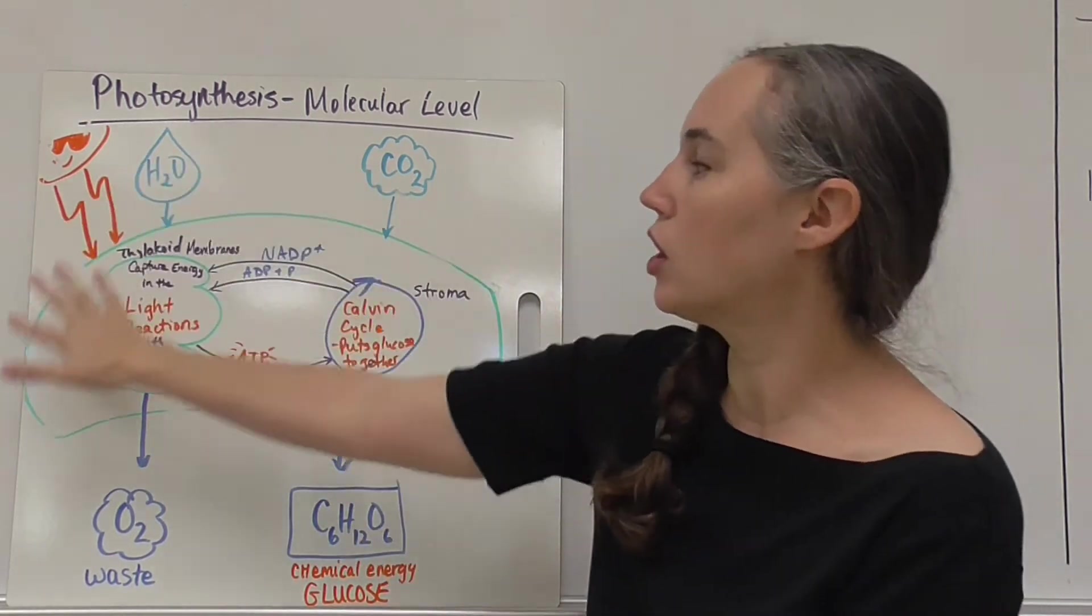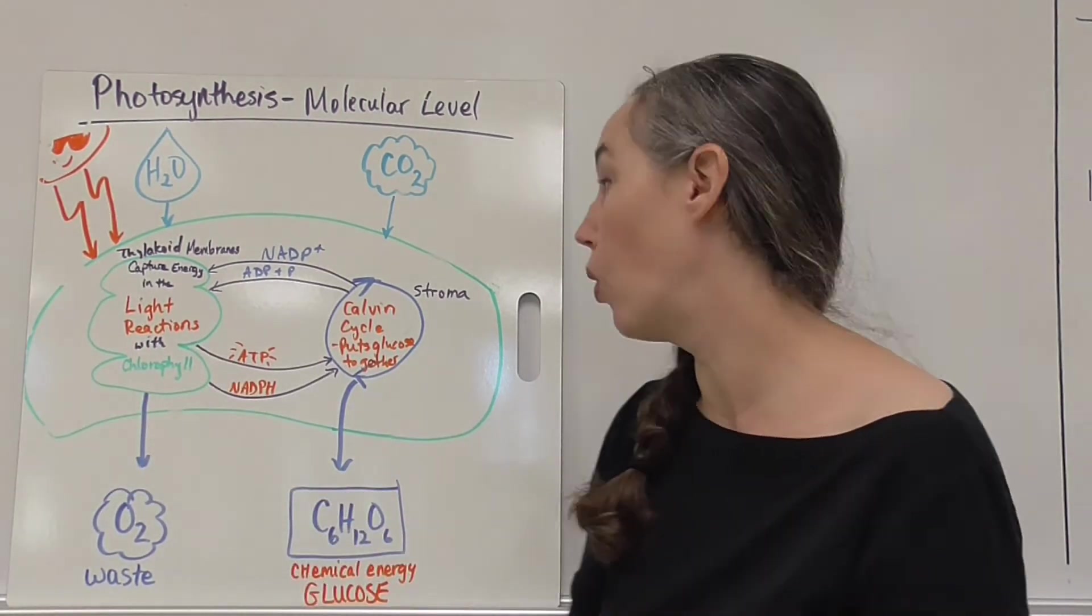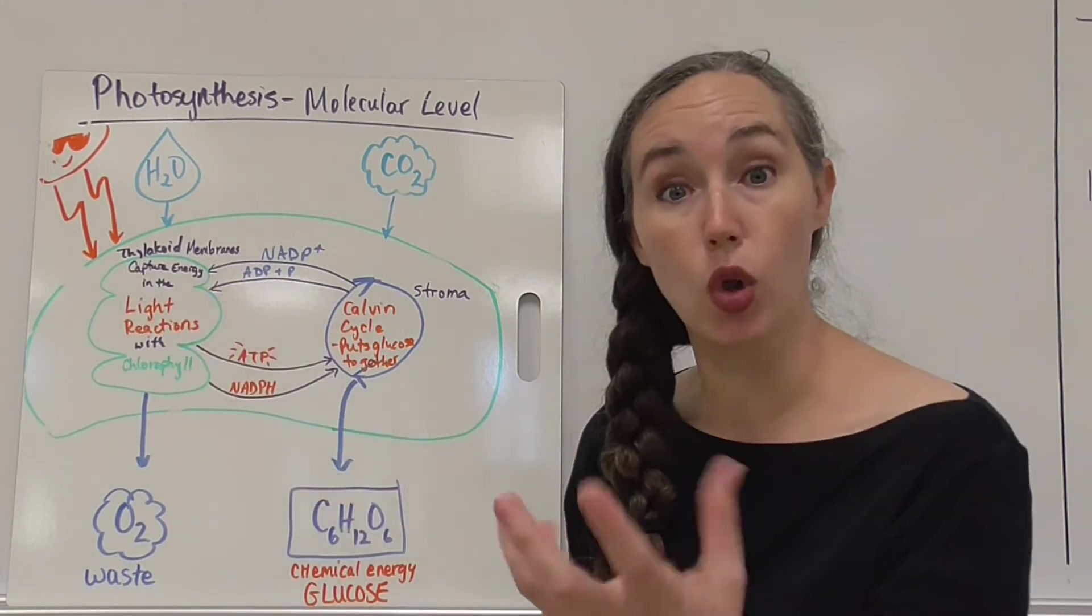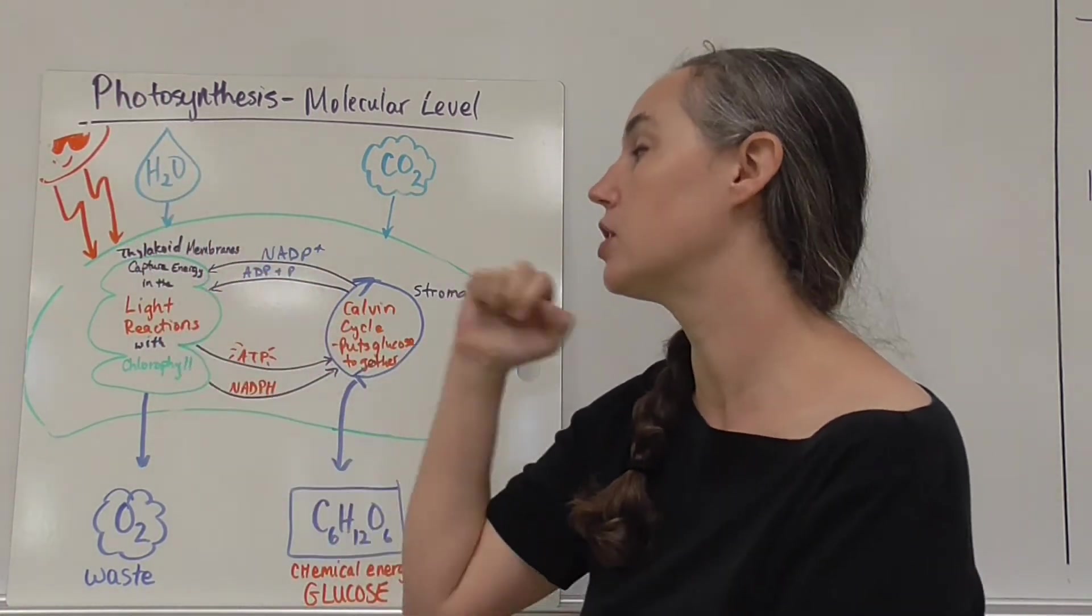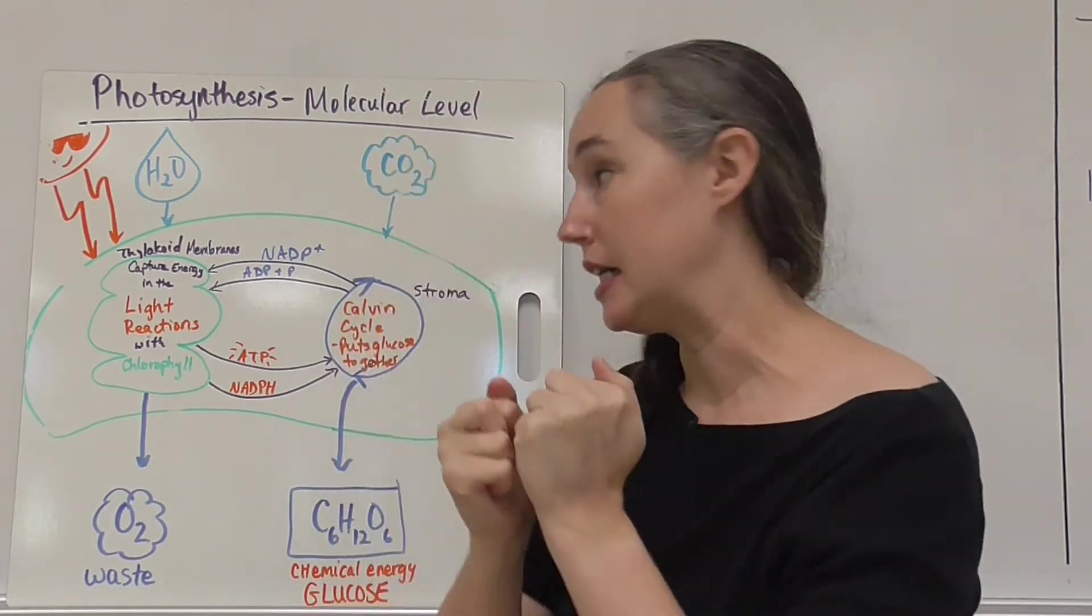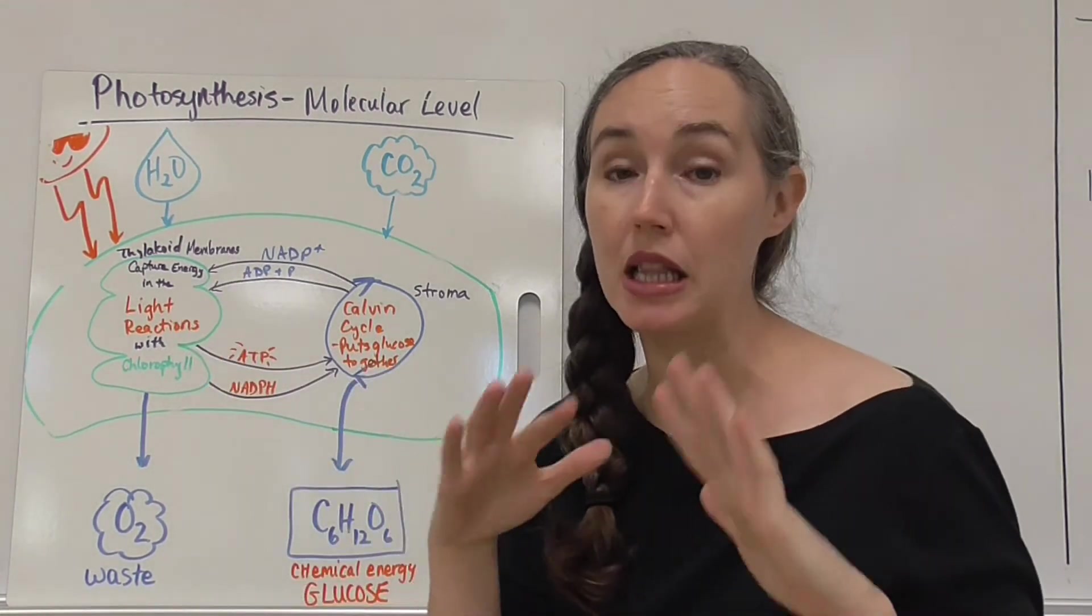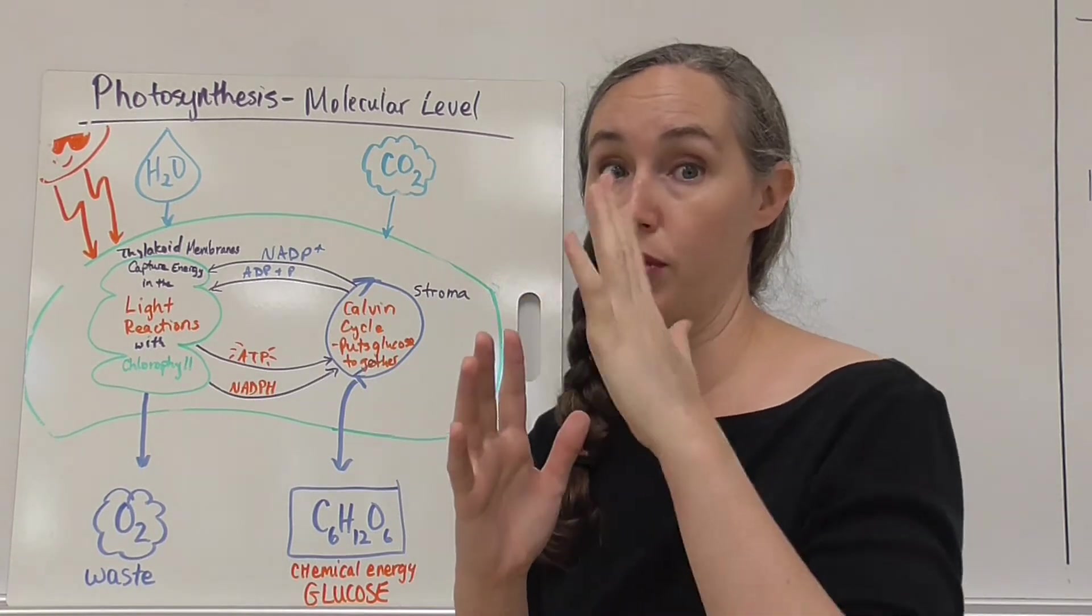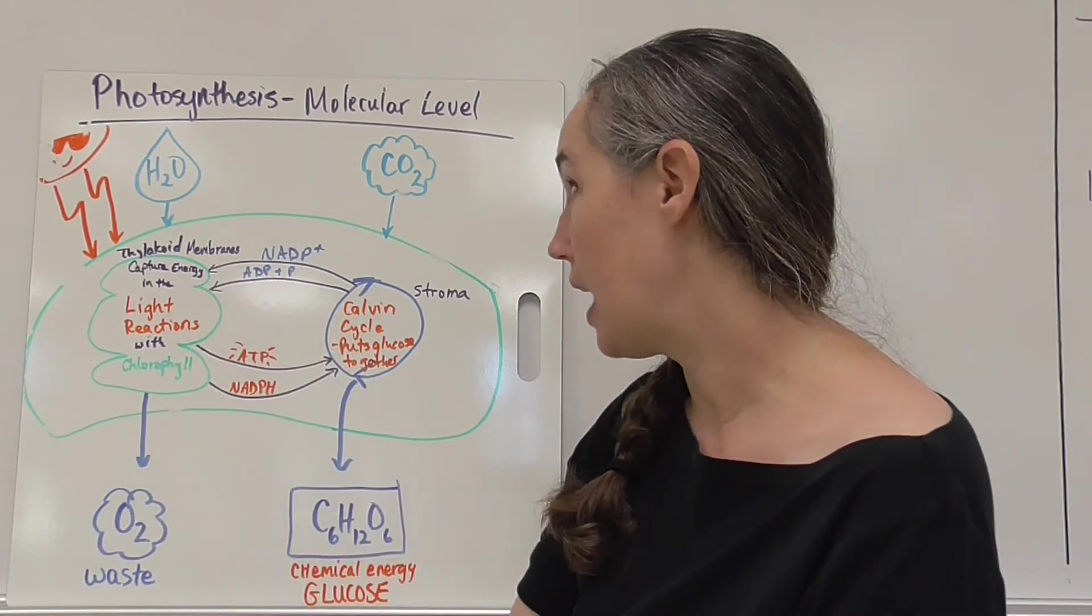We can break photosynthesis down if this is our chloroplast into the light reactions and the light independent reactions or the Calvin cycle. The light reactions happen in the thylakoid membrane, so this is where our chlorophyll is. Light is going to come towards the leaf, it's going to come to the chloroplast, and chlorophyll molecules in the thylakoid membrane are going to absorb that light. Water is coming into the thylakoid membrane and basically very fundamentally what's happening is it's splitting the hydrogens, the protons and electrons, off of water and leaving the oxygens. Then the oxygens will pair up and they will leave as O2 gas out of the leaf.